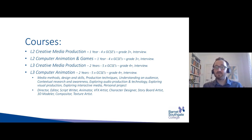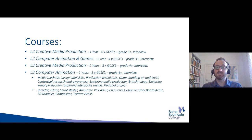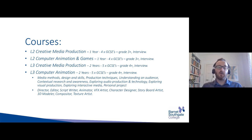Creative media production is predominantly film and television production, looking at the different ways that film and TV production takes place. Computer animation and games covers how both 2D and 3D animation is produced. The entry criteria for these are the same as level two and level three for Art and Design, but the interview is slightly different — you don't necessarily have to provide a portfolio of work. Instead, for interview purposes, we would ask you to produce a small piece of writing, and for the animation and games course, some drawing, as there are elements of drawing within those.